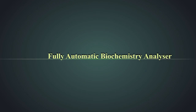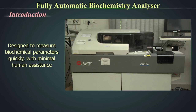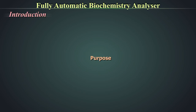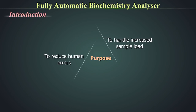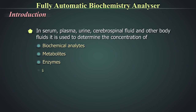A fully automated biochemistry analyzer is designed to measure biochemical parameters quickly with minimal human assistance. The purpose of this analyzer is to reduce human errors, handle increased sample load, and provide accurate results more efficiently. They are used to determine the concentration of various biochemical analytes, metabolites, enzymes, electrolytes, drug levels, etc.